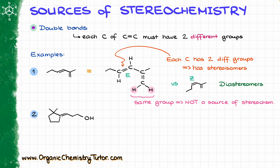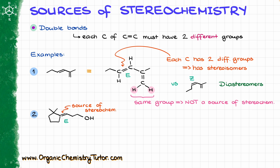Here is another example with a double bond that is a source of stereochemistry. On the left side, we have two different groups. On the right side, we have a group with OH and an implicit hydrogen — also two different groups. As indicated, this is the E isomer, and if I draw the Z isomer, that's how it looks. Just like in the previous case, these two are going to be diastereomers of each other.